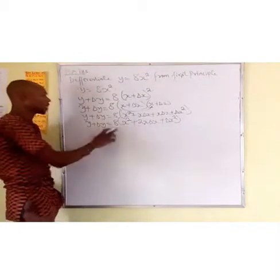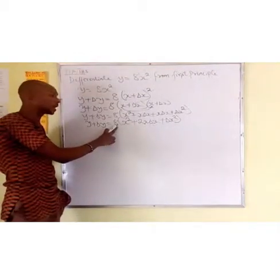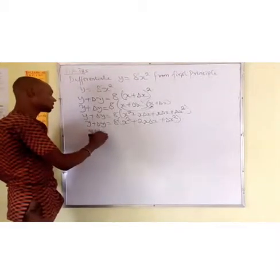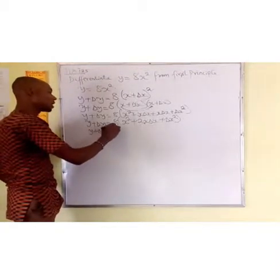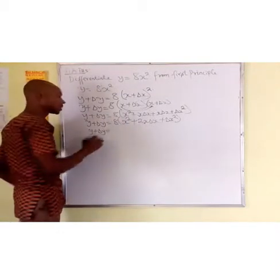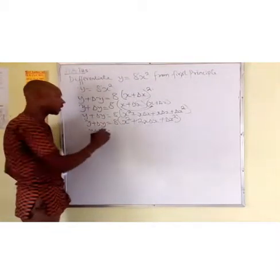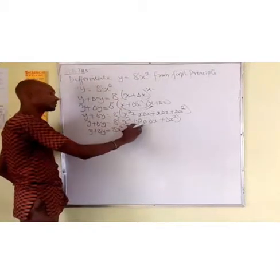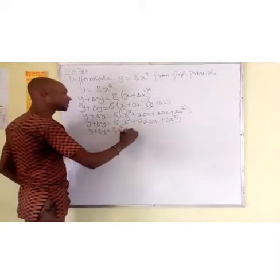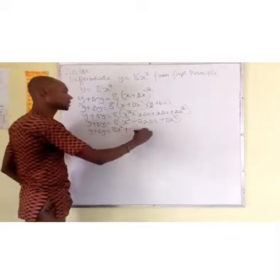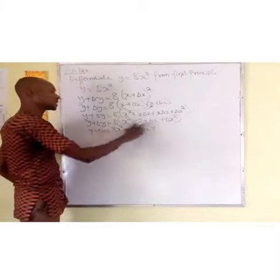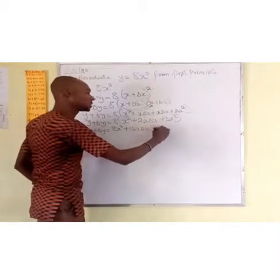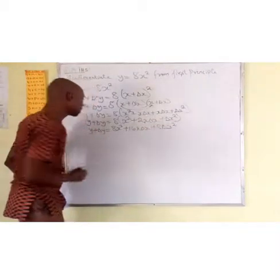Friends, we are still going to expand. We still have 8 outside, and we are having y plus Δy equal to 8 times x squared, giving us 8x squared, plus 8 times 2x·Δx giving us 16x·Δx, plus 8 times Δx squared giving us 8Δx squared.